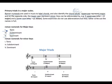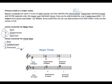For major keys: uppercase I for tonic, uppercase IV for subdominant, uppercase V for dominant — all uppercase, meaning major. For minor keys: lowercase i for tonic, lowercase iv for subdominant, uppercase V for dominant. The dominant in a harmonic minor scale is always a major chord because of the raised 7th degree — it causes our dominant to be major, as you will see in the following examples.